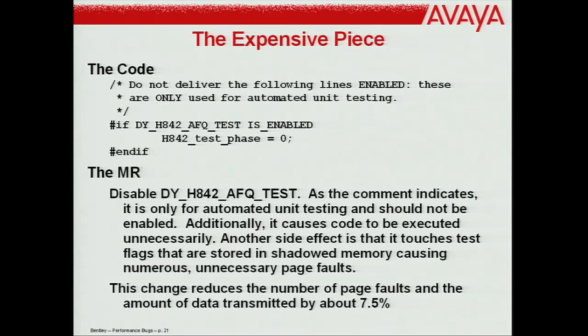This program was first built in the late 1970s — it's been around 30 years, accreting crud. There was a bug report filed about disabling this code; as the comment indicates, it's only for automated unit testing and should not be enabled. It causes code to execute unnecessarily and had a horrible impact on memory. Because of that one excess line of code, the entire system was about 7.5% slower than it needed to be.